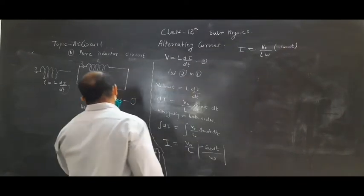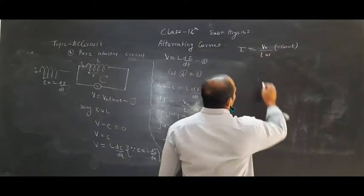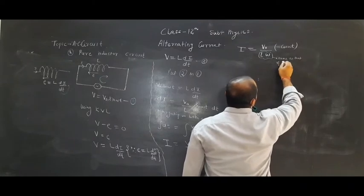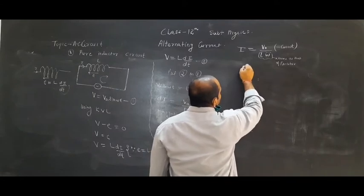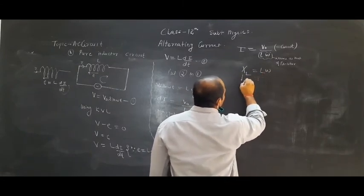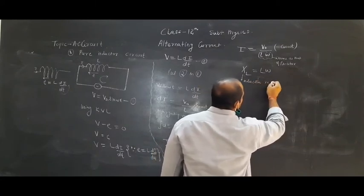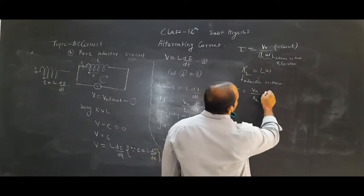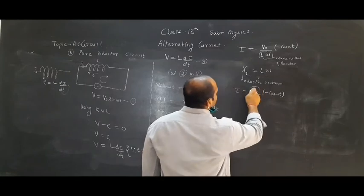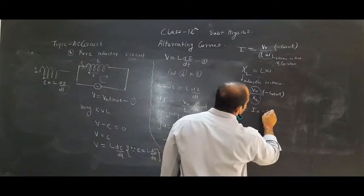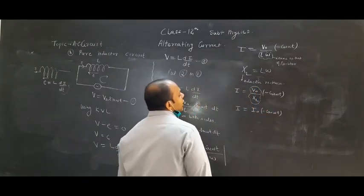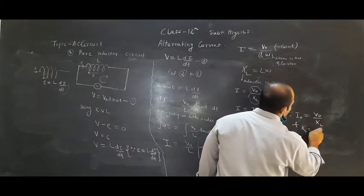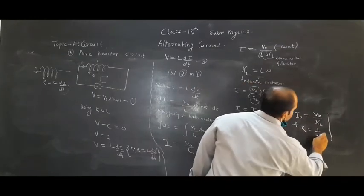This expression V₀/(Lω) looks like V/R — similar to resistance. So we call Lω by a new name: XL, called inductive reactance. Therefore I₀ = V₀/XL, and XL = ωL. So I = −I₀·cos(ωt), where I₀ = V₀/XL.